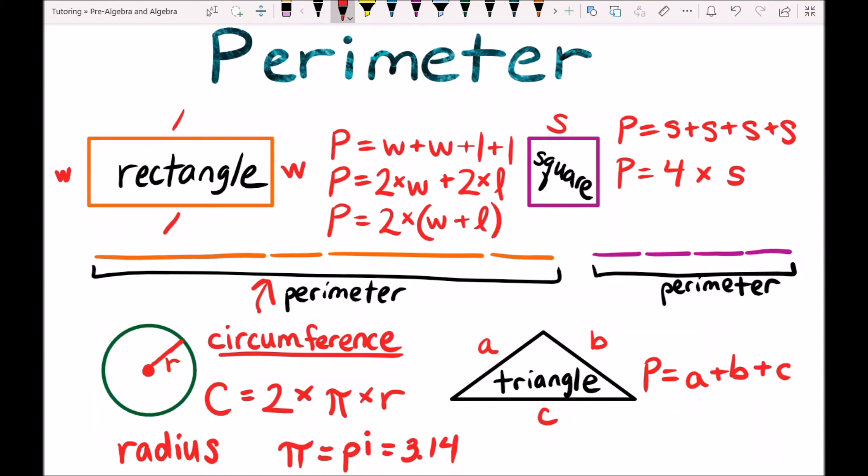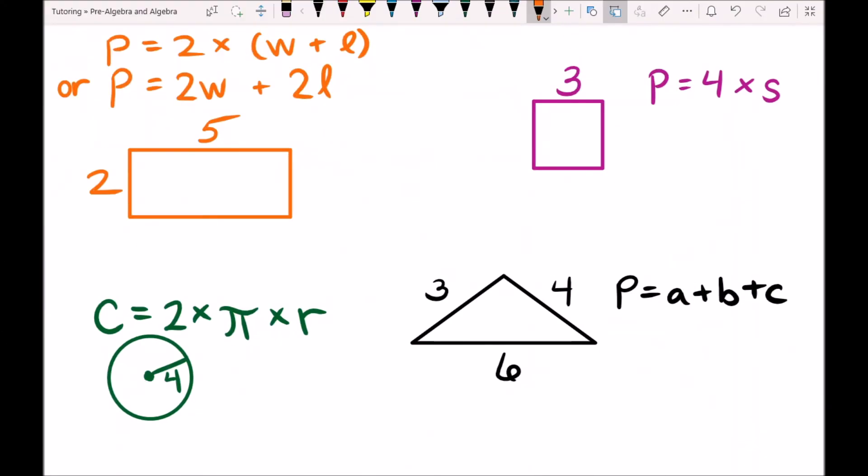So to get the circumference of a circle which is the perimeter of a circle we multiply 2 times pi times the radius. So let's go over an example of each of these perimeter calculations. So let's start with the rectangle. We know that our width equals 2 and our length equals 5.